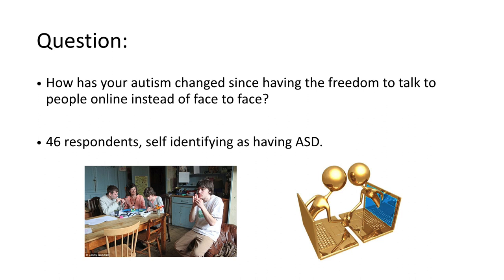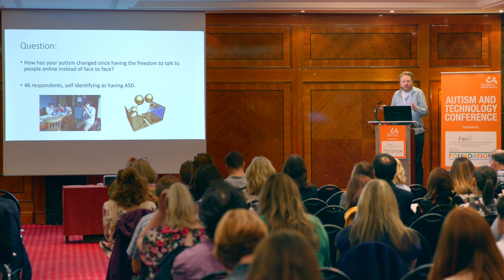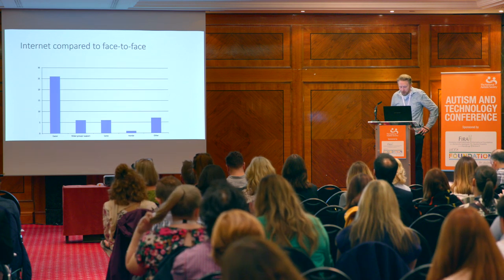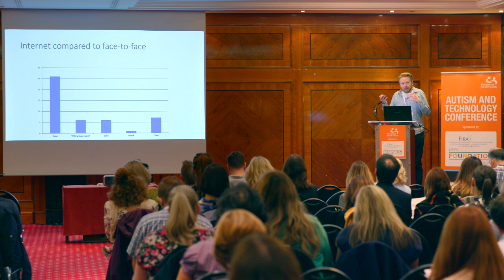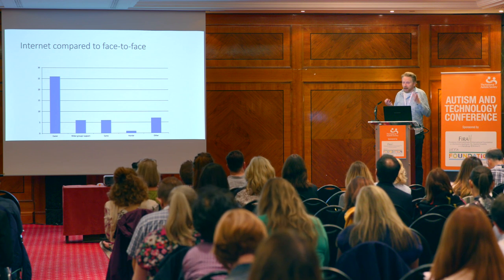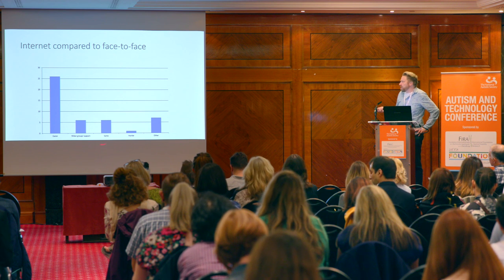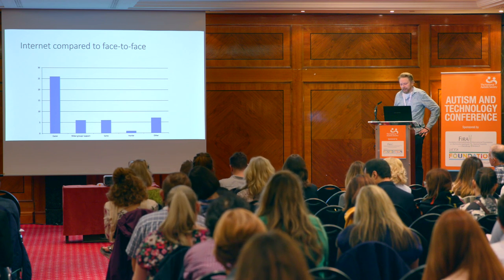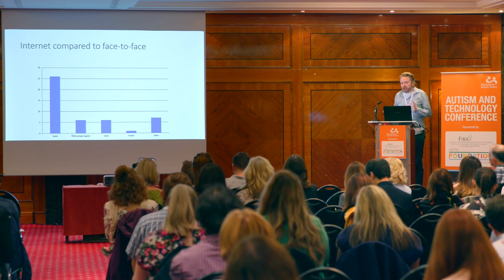We asked autistic people: has autism impacted on your freedom to talk online? The vast majority said yes, they find it much easier to communicate digitally than face-to-face. A second advantage was being able to interact with other people who are like me — socialising online with people who are also autistic. Some found it the same, and one person found interacting online harder. But overarchingly, people did find digital communication easier.